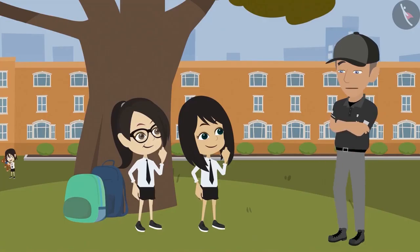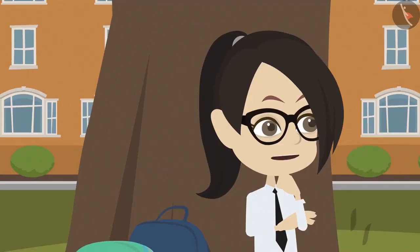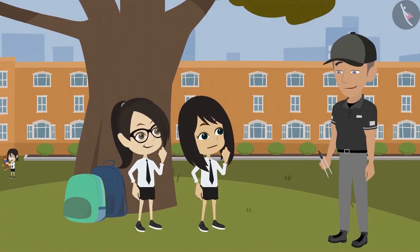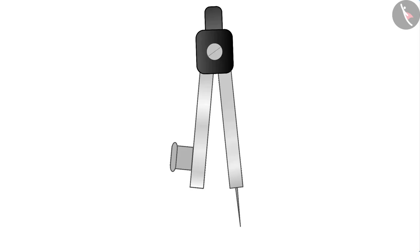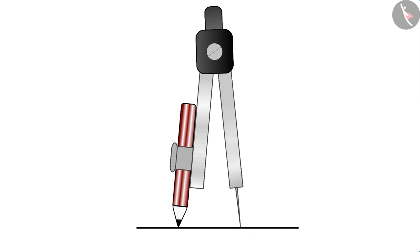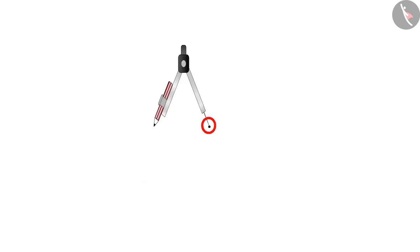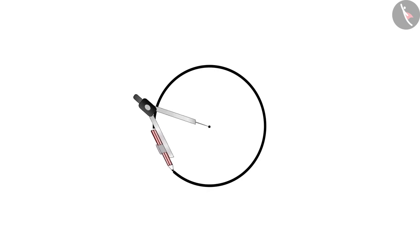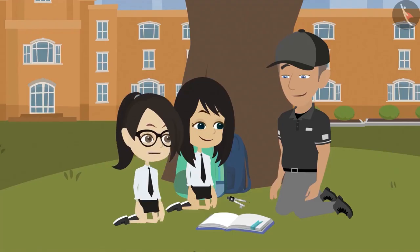The teacher points out that the students have not been taught how to use a compass. A compass is a tool that helps make circles. The pencil is fixed so that the writing end and the pointed end are on the same line. Pull apart the compass, keep the pointed end on the paper without moving it, and turn the pencil end to create a circle. Once complete, remove the compass — a perfect circle is made easily.